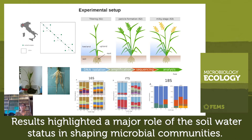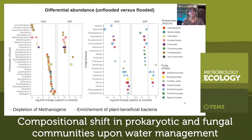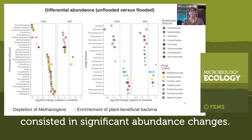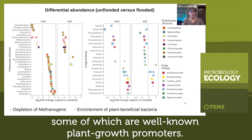Results highlighted the major role of soil water status in shaping microbial communities. We focused on enriched and depleted OTUs that were taxonomically assigned. Compositional shifts in prokaryotic and fungal communities upon water management consisted of significant abundance changes. We also identified a great number of genes responding to flooding, some of which are well-known plant growth promoters.